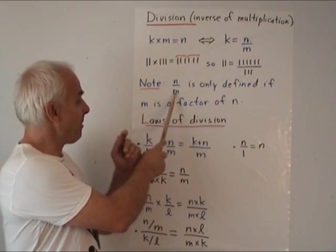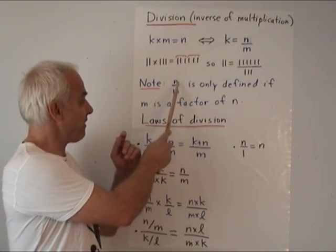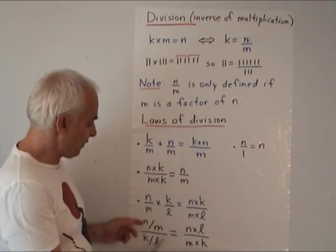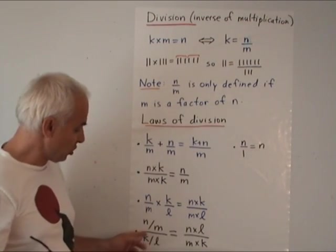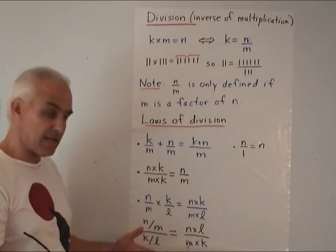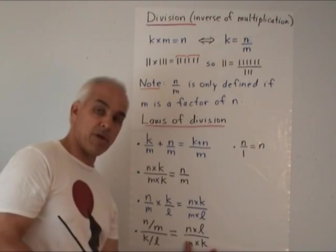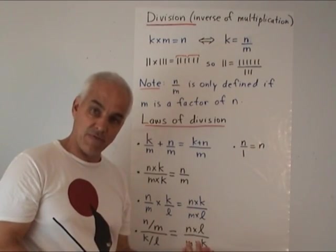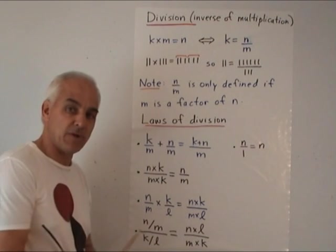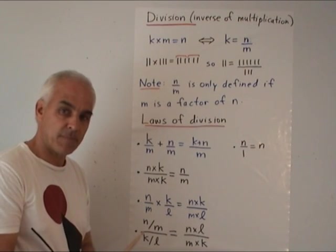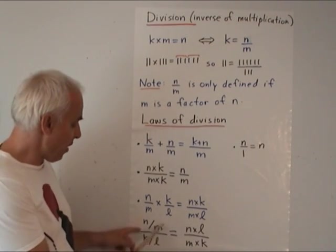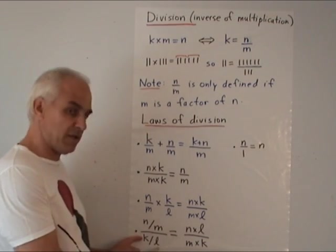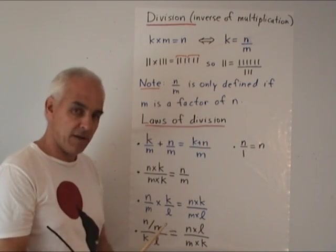One point about these relations: we said that division is only defined when the denominator is a factor of the numerator. So in all these formulas we assume that if both sides of the formula are well-defined, then the two sides are equal. We don't claim that if one side is well-defined then the other side is necessarily well-defined.